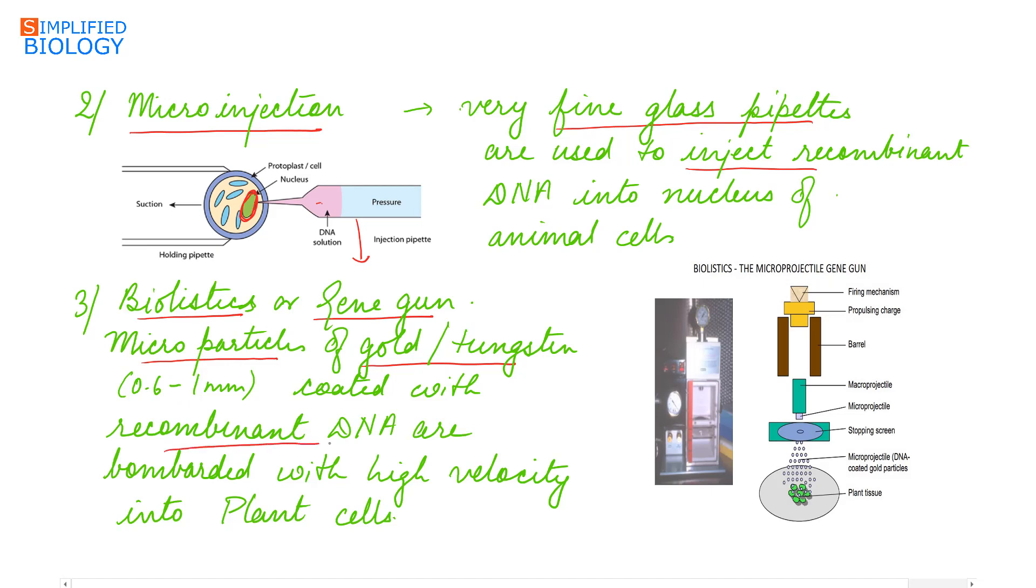Coated with recombinant DNA are bombarded with high velocity into the plant cells. Now this is a micro projectile gene gun where micro particles of gold and tungsten coated with recombinant DNA are bombarded with high velocity into the plant cells.